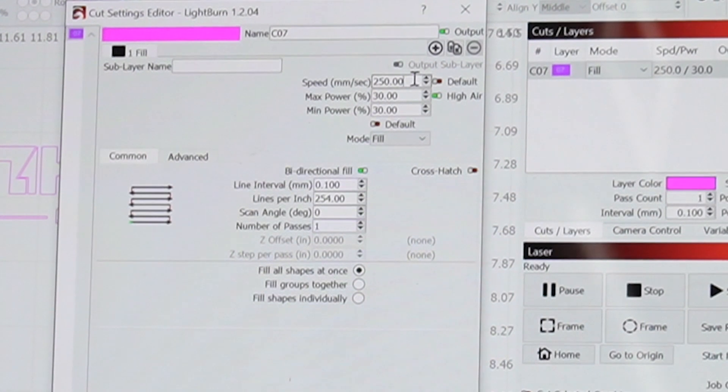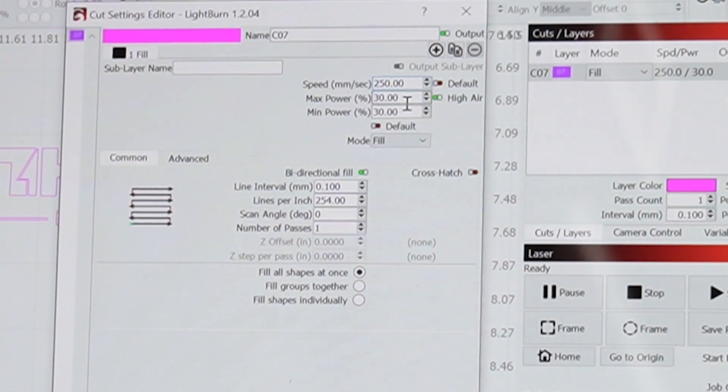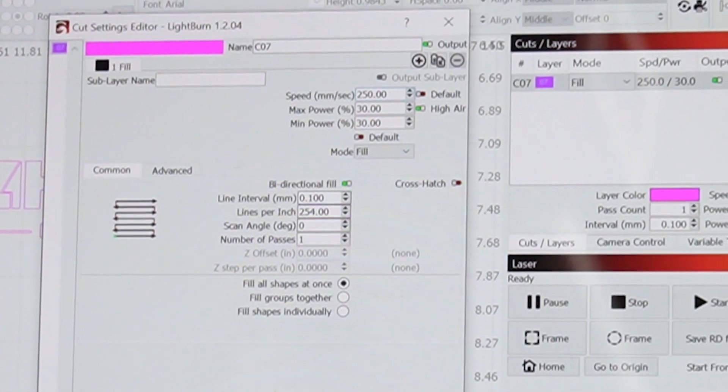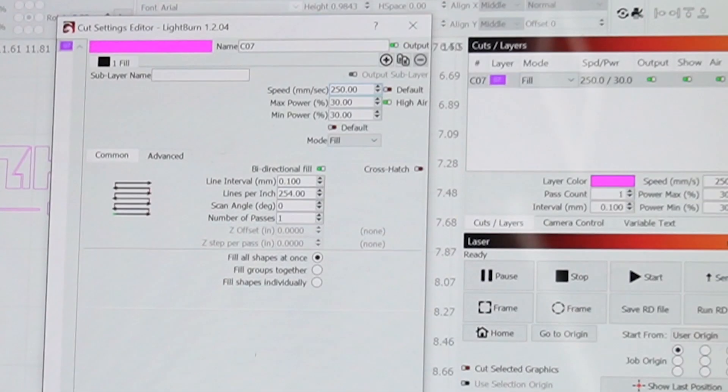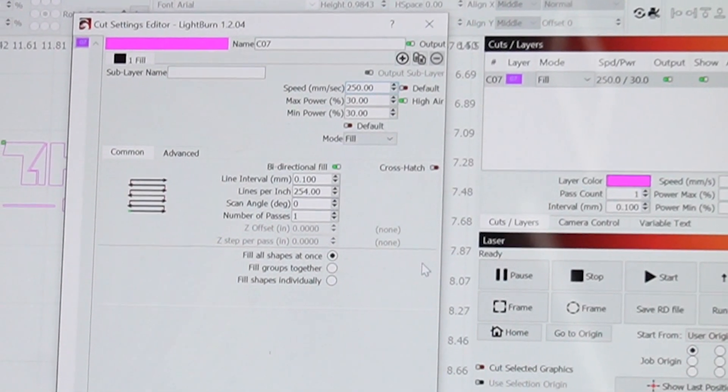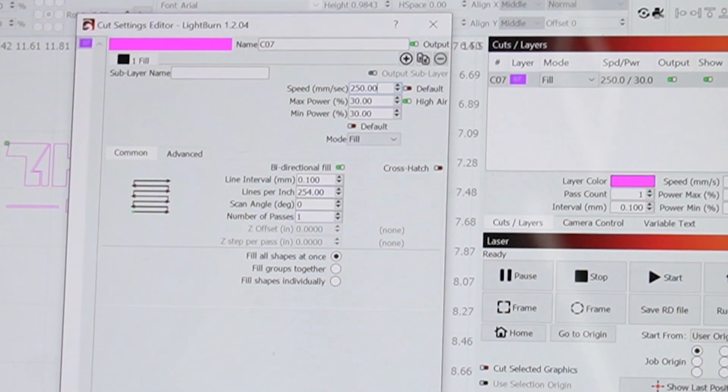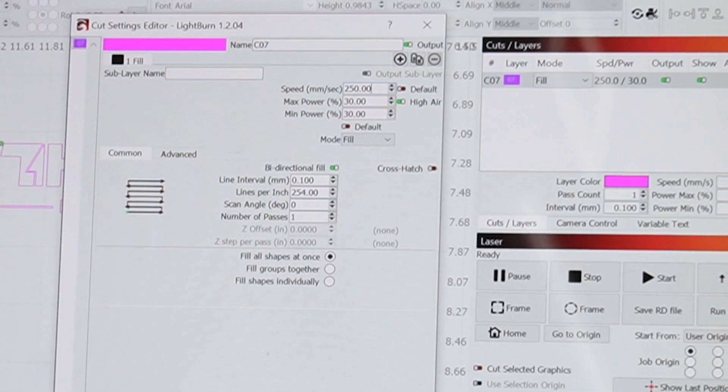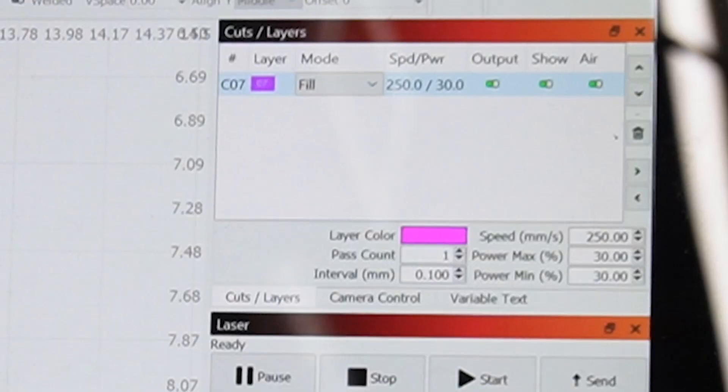So I've got this set up to 250 millimeters a second, 30% power and a line interval of 0.1. Sometimes I know some people, when they're engraving mugs, they'll decrease your line interval a little bit to get higher resolution, but I'm just going to set it as the default for this. We'll see how it turns out.